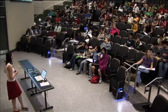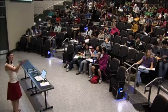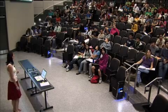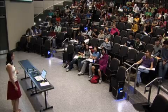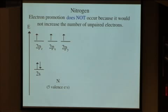Would you expect to see electron promotion in nitrogen, where we pull one of these 2s electrons into one of the 2p orbitals? No, good. Electron promotion does not happen in nitrogen because it would not increase our number of unpaired electrons. No matter what we do in terms of promotion, we're always going to have three unpaired electrons.